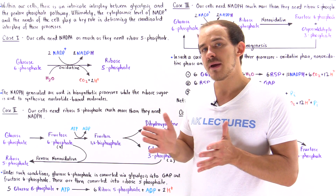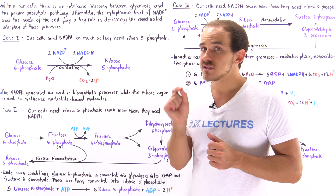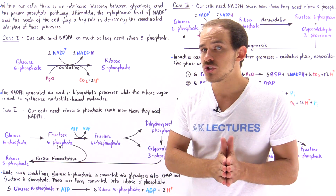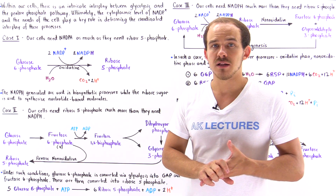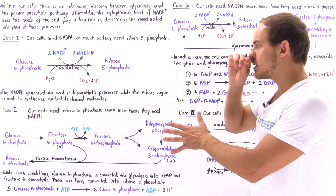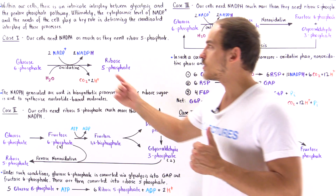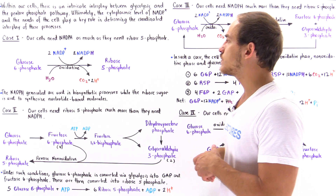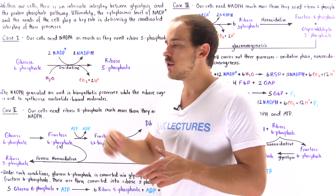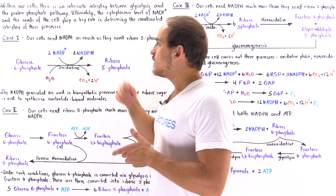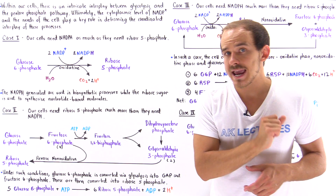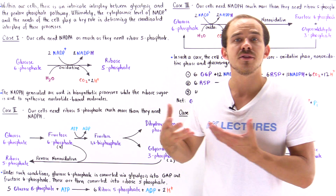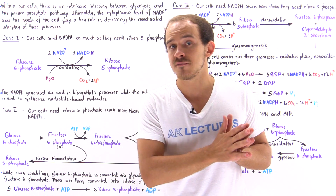In case number one, we're assuming that our cells need NADPH molecules as much as they actually need ribose-5-phosphate molecules. Before we discuss this further, let's remember what our cells use NADPH for and what our cells use the ribose-5-phosphate molecule for. The NADPH molecule is a very important reducing agent that our cell uses for a variety of different types of biosynthetic processes and detoxification processes.